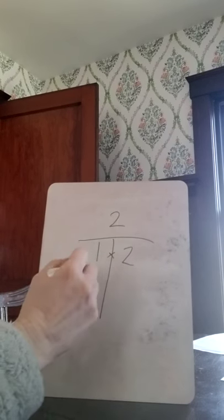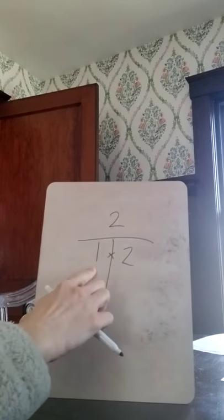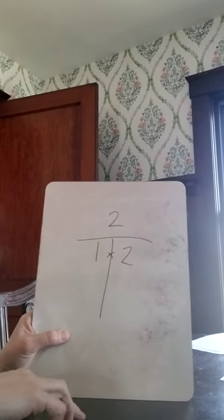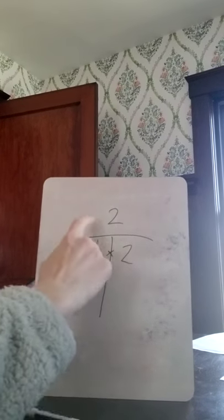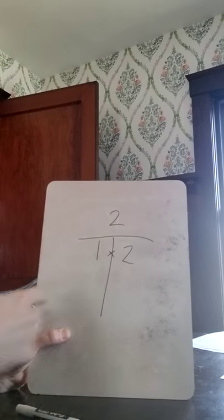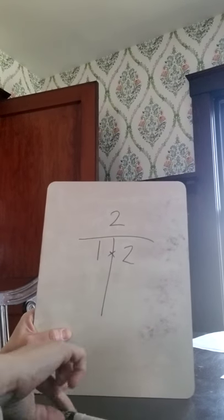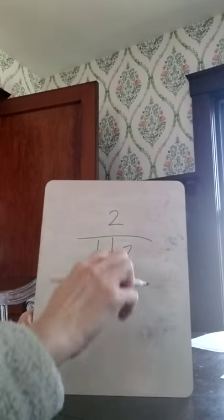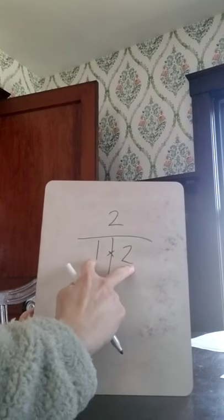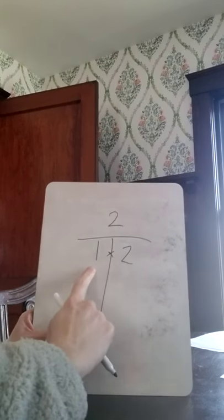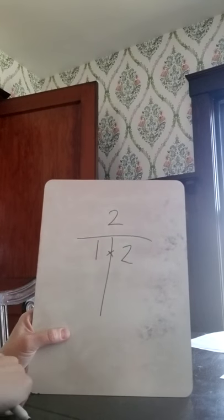But if I go to 2, I already have a 2 here, so that means I'm already done. There are only 2 factors in 2, 1 and itself. So that means it's a prime number. It's a whole number with 2 factors, which include 1 and itself. So that's a prime number.